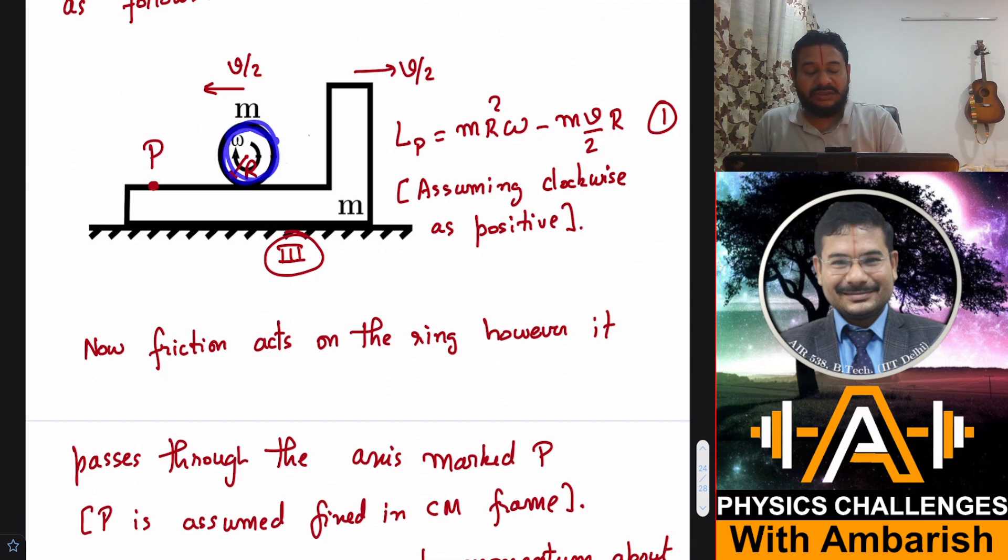Now let's see carefully what are the torques acting on this ring. This is a ring by the way, not a cylinder. N and mg are balanced and friction is going to pass through this line, so the torque of friction about any point you choose on this line will be zero.